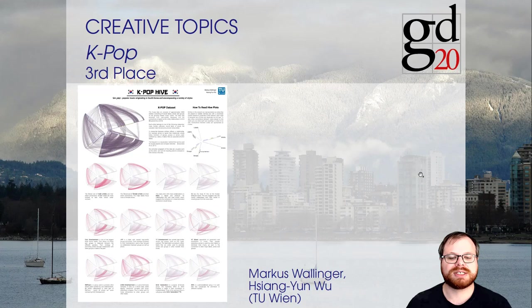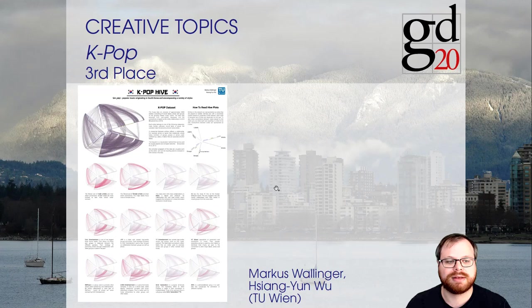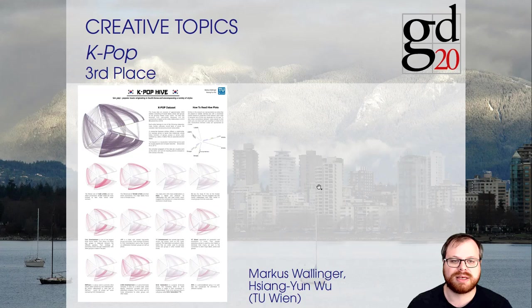In third place, we have a very similar layout done by Markus Wallinger and Xiang Yunwu, also from TU Vienna — again a hive layout. They also gave us drawings of some filtered views, where you can see interactions that usually you won't see in other datasets. For example, from this visualization they found out that small labels are more likely to sign male artists than female ones — something you cannot see in any of the other layouts.